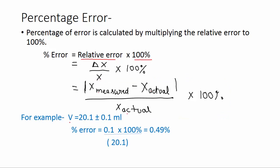For example, we can take the value of volume V = 20.1 ± 0.1 mL and find the percentage error. The absolute error is 0.1 mL and the actual value is 20.1 mL, multiplied by 100%. That gives us 0.49%, which is the percentage error in this volume.